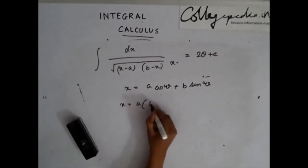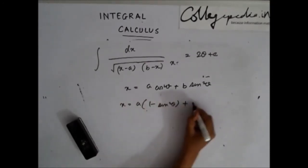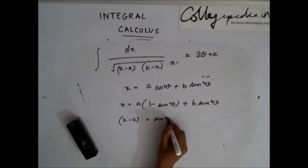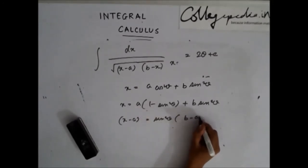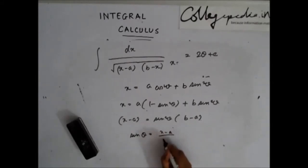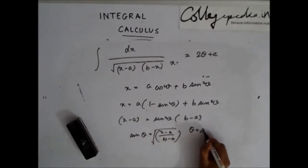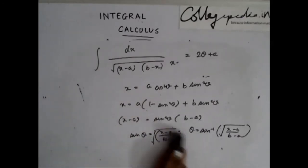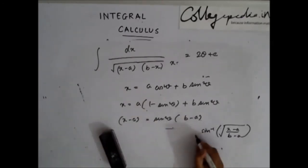This gives x − a = (b − a) sin²θ, so sin²θ = (x − a)/(b − a), meaning sinθ = √[(x − a)/(b − a)], and therefore θ = sin⁻¹ √[(x − a)/(b − a)]. The final answer is 2 sin⁻¹ √[(x − a)/(b − a)] + c.